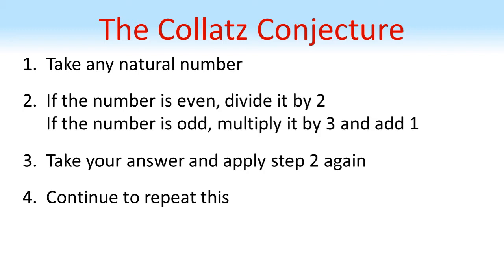The Collatz conjecture states that eventually we will get to the number one. It states that this will happen for any natural number.